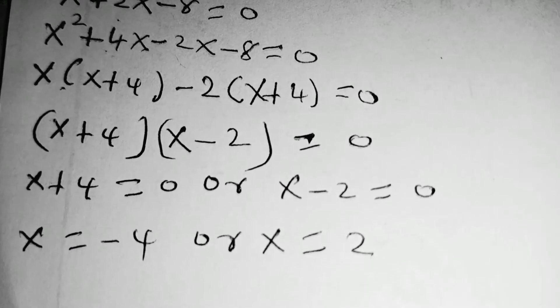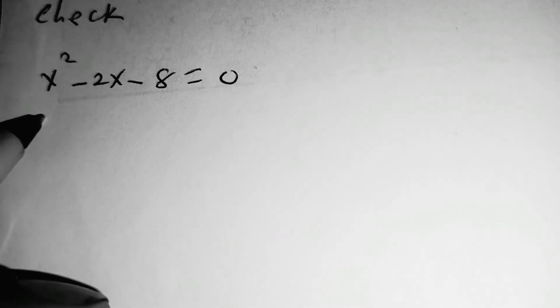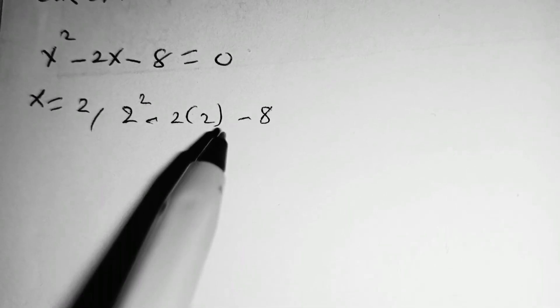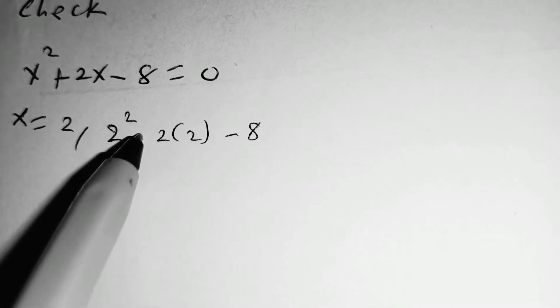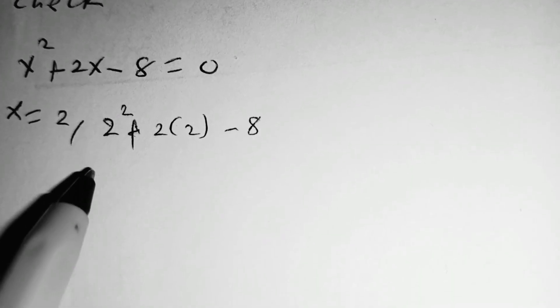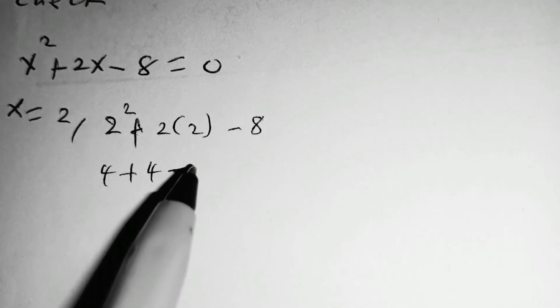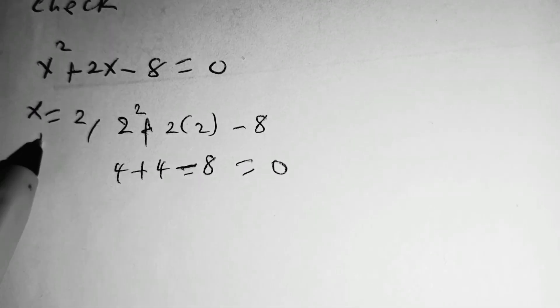We can check to see whether our working is correct. When x is equal to 2, we check, you will have 2 squared plus 2 multiplied by 2 minus 8. This is plus in the original equation. So here we shall have 4 plus 4 minus 8. This will be equal to 0, meaning that this is correct.